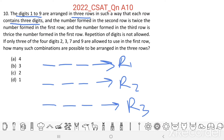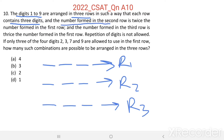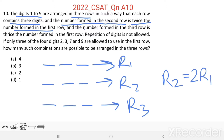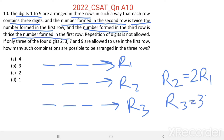The number formed in the second row is twice the number formed in the first row (R2 = 2×R1), and the number formed in the third row is three times the number formed in the first row (R3 = 3×R1). Repetition of digits is not allowed, and all 9 digits must be used across the 3 rows.